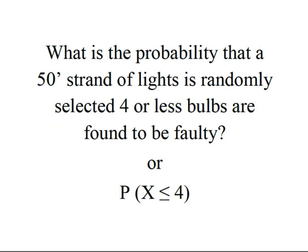So we want to know what's the probability that a 50 foot strand of lights is randomly selected and four or less bulbs are found to be faulty. This is the probability that X is less than or equal to four. It could also be stated as four or fewer but we're looking for less than or equal to four.